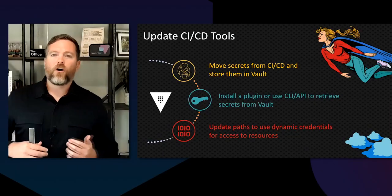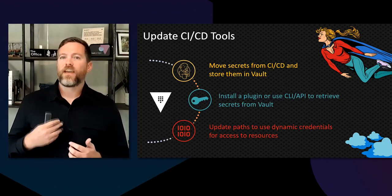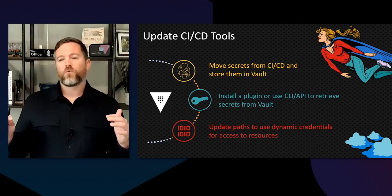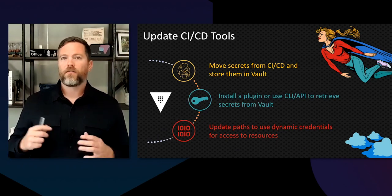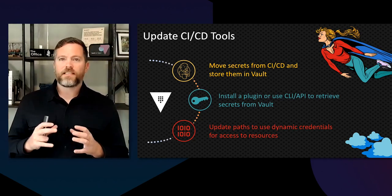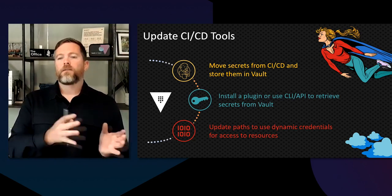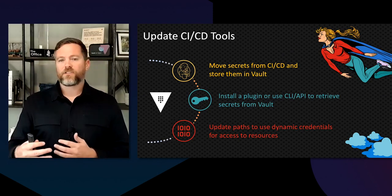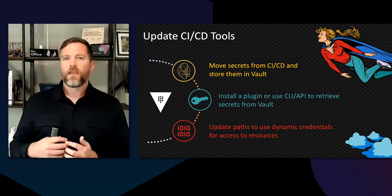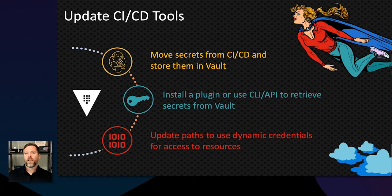Once you get all those credentials in Vault, start updating your CI/CD tools to take advantage of Vault. Instead of storing secrets in each individual CI/CD platform like Jenkins Secrets or Ansible, consolidate into Vault and have your CI/CD platform reach in and get those secrets. You can do the same thing — move those static secrets over, have the CI/CD application grab them from Vault, and eventually migrate those over to dynamic credentials. You can install a plugin with Jenkins to integrate directly with Vault, or simply use the CLI or API to retrieve those secrets.